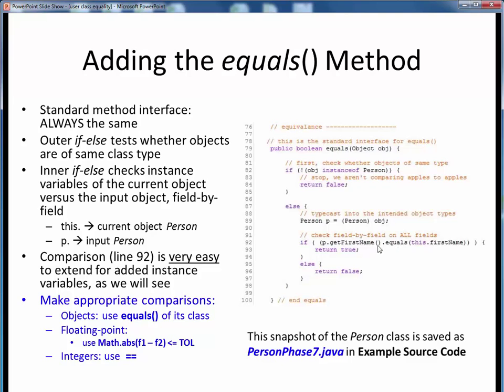In general, make sure to use the right type of comparison pertinent to the data. We've seen how to perform each of these comparisons now. For any object types, use their class's equals method. For floating point values, use the absolute value in a tolerance.